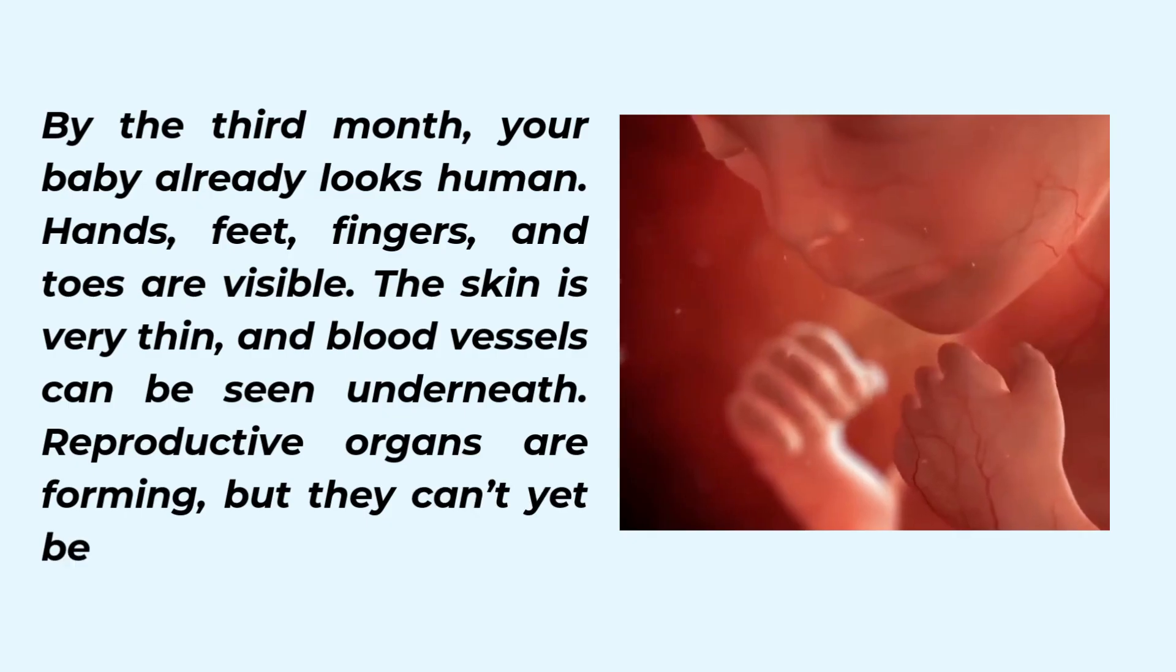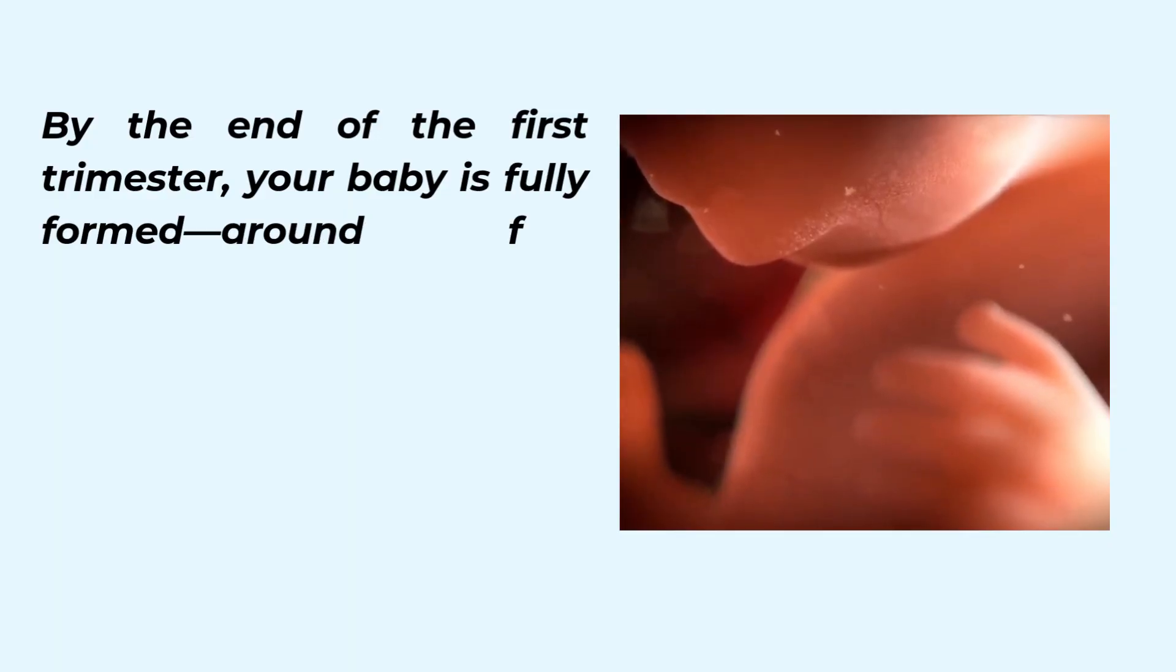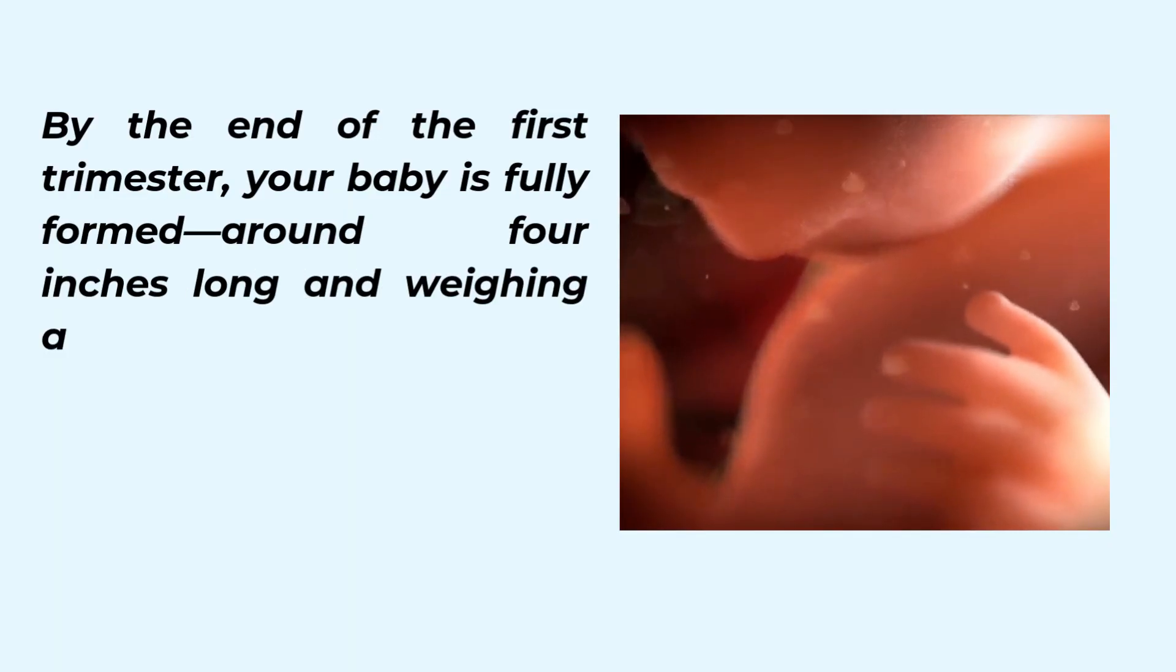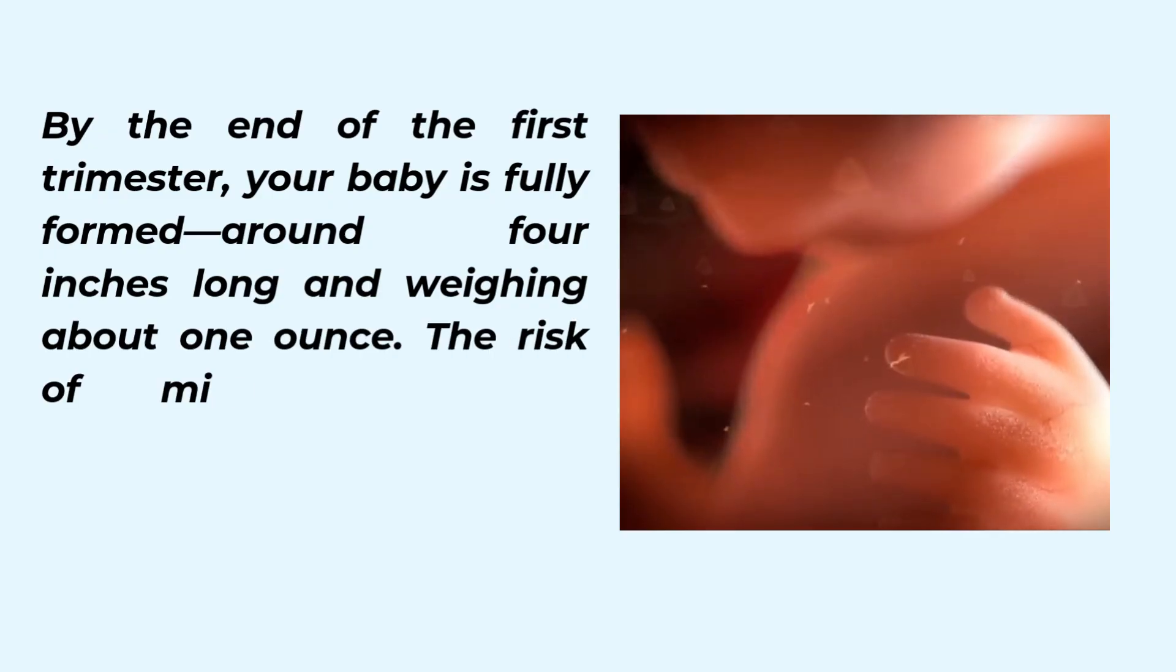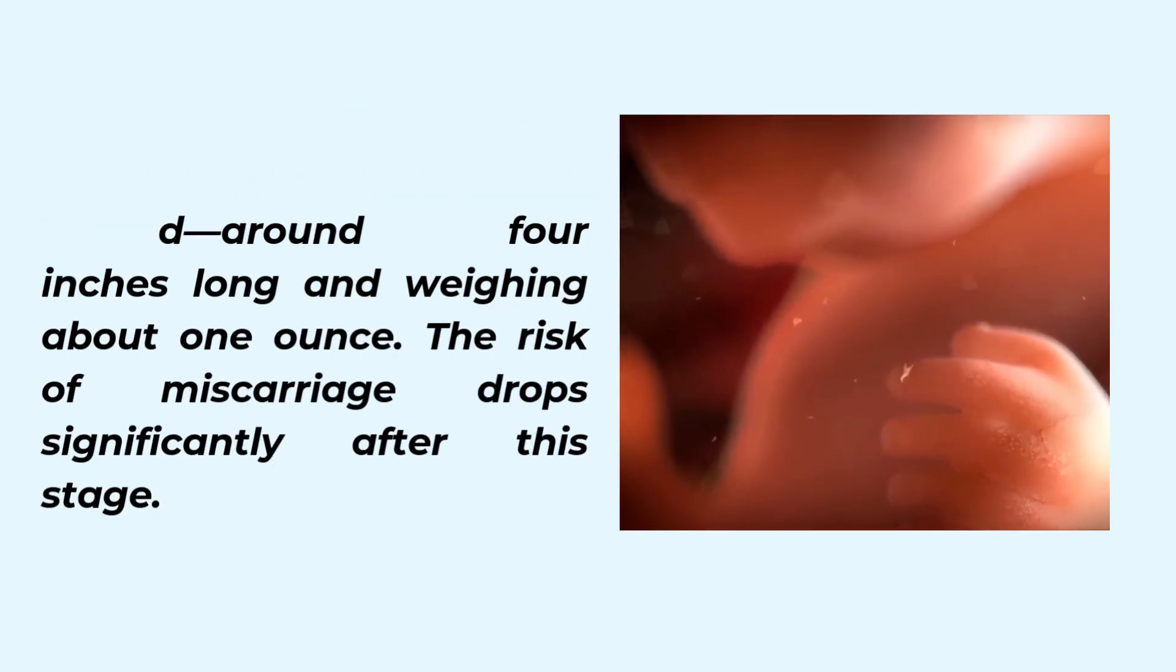Reproductive organs are forming, but they can't yet be seen on an ultrasound. By the end of the first trimester, your baby is fully formed, around four inches long and weighing about one ounce. The risk of miscarriage drops significantly after this stage.